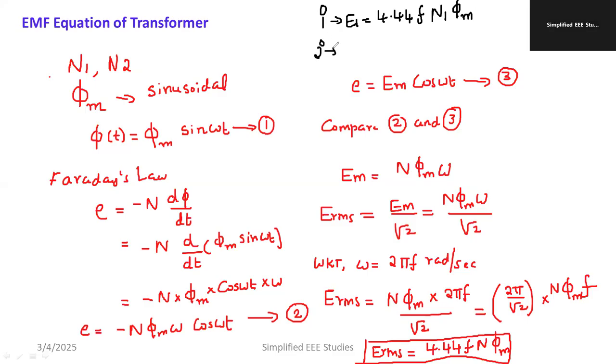If I talk about the secondary side, E2 is equal to 4.44*f*N2*phi_m. This is equation number 5. If you take the ratio between equation 5 and 4, E2/E1 is equal to N2/N1, which is equal to k, where k is known as the transformation ratio.